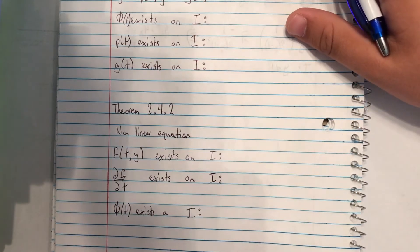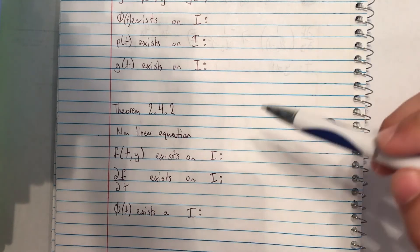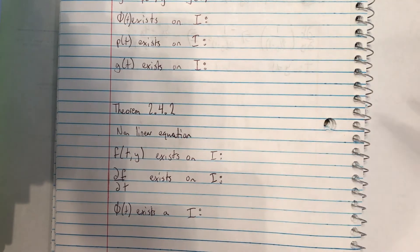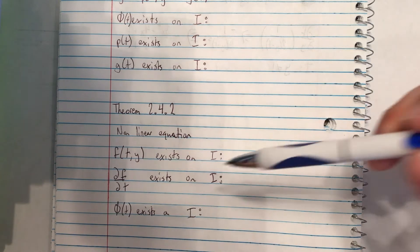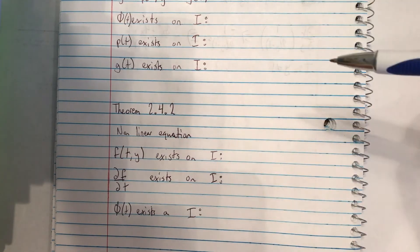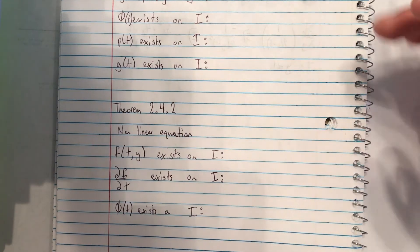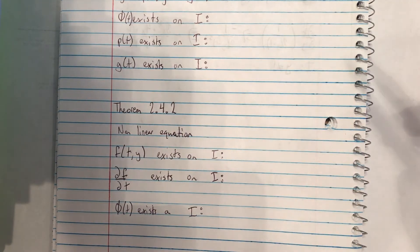Next, we have 2.4.2. And this theorem, it's a nonlinear equation and it states that the function f with variables t and y exists on some interval, and then the partial derivative of f with respect to t or the independent variable will exist on some interval.